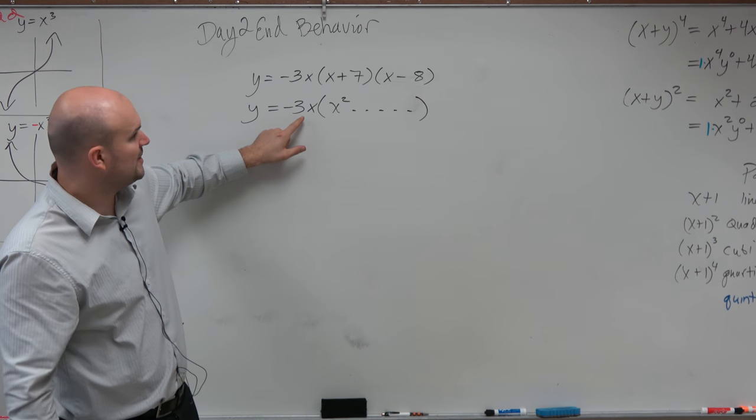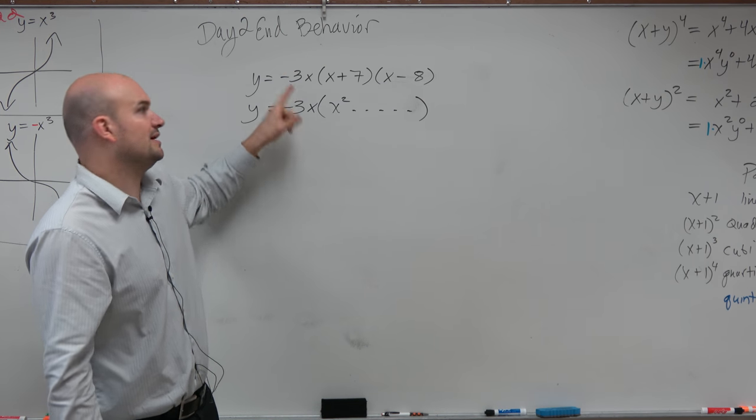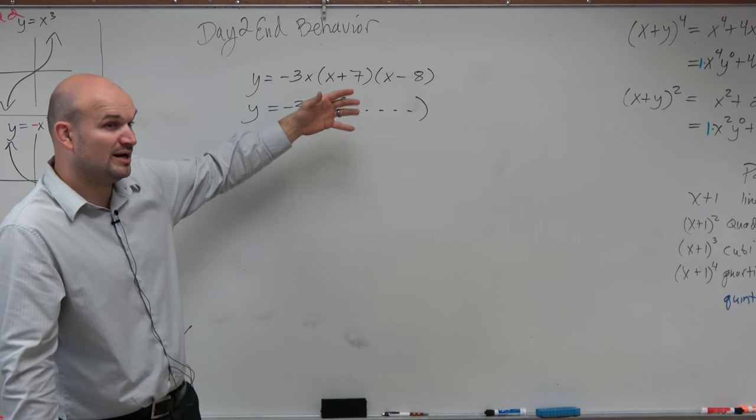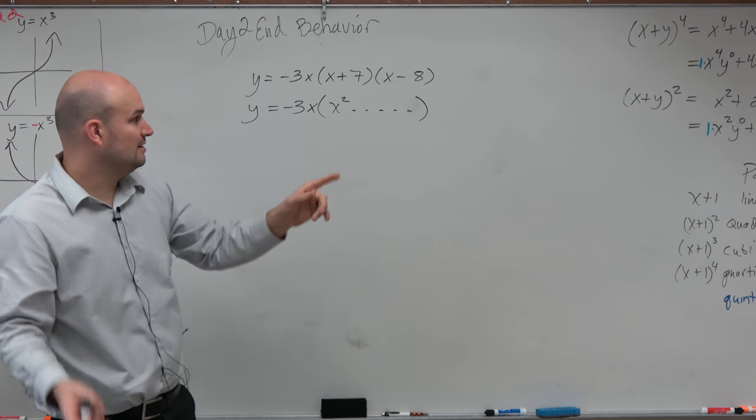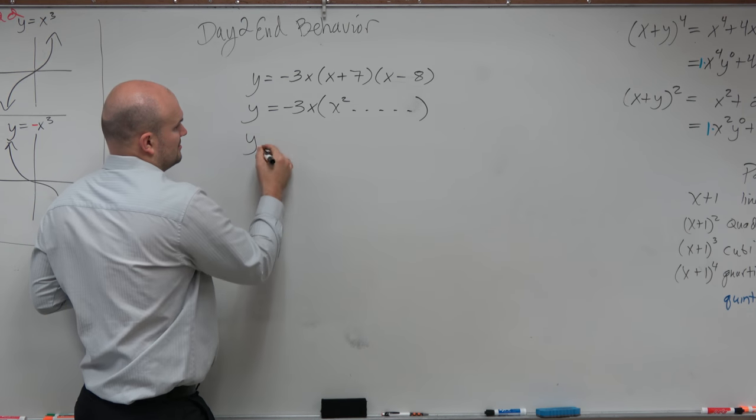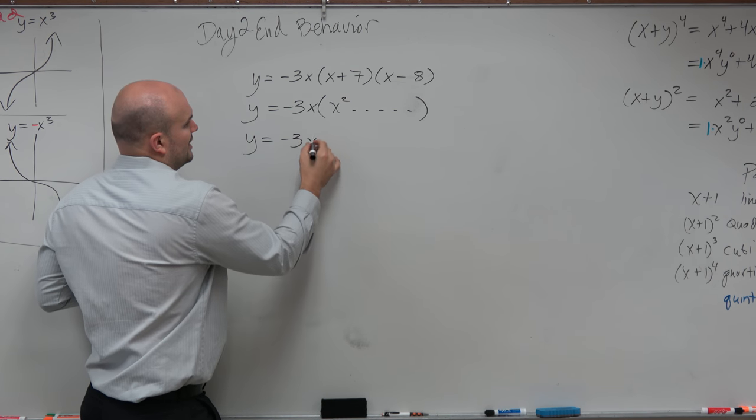Then if I was going to multiply this, I'd apply the distributive property. I'd multiply negative 3x times everything. We don't really care times everything. We just want to know what is the highest power. So negative 3x times the x squared, or times that expression, will be negative 3x cubed.